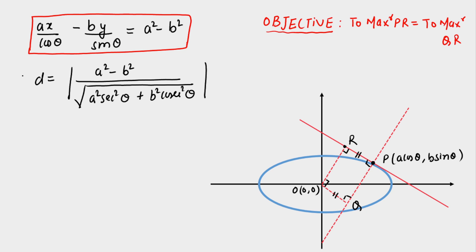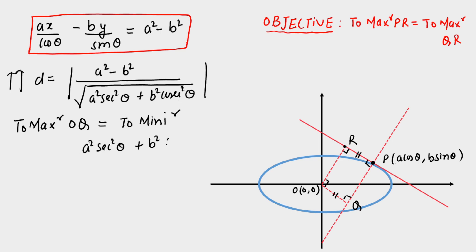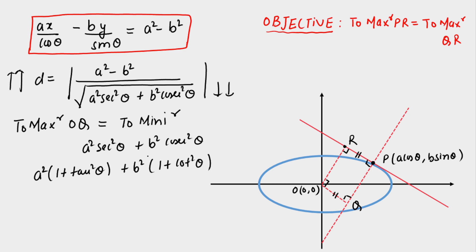To maximize d, we need to minimize the denominator: a²sec²θ + b²csc²θ. Rewriting, this equals a²(1 + tan²θ) + b²(1 + cot²θ) = a² + b² + a²tan²θ + b²cot²θ. Without differentiating, we can find the minimum of this expression directly.